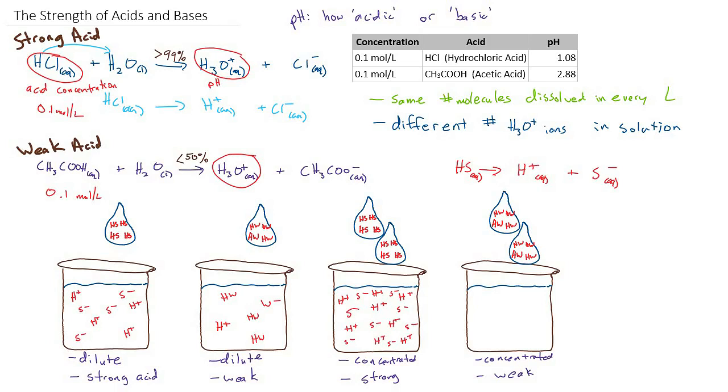But for our weak acid, of the eight molecules, only relatively few are going to ionize. So maybe two of them turn into separate H+, and W-, and all the rest are still as HW in their original form.